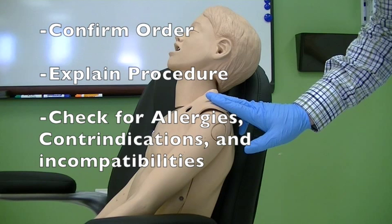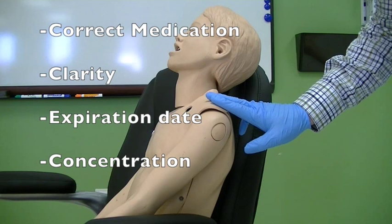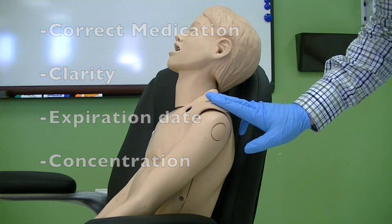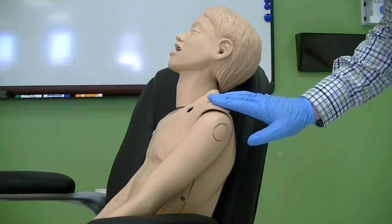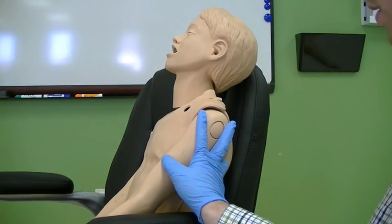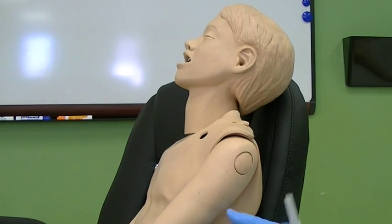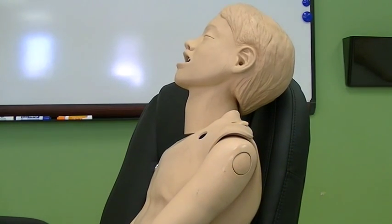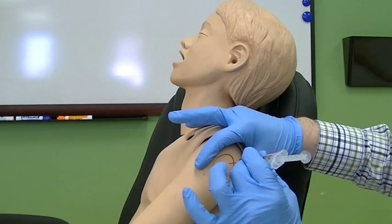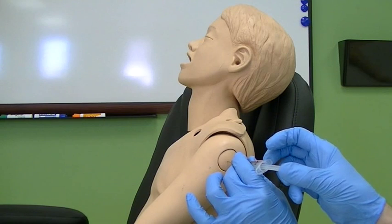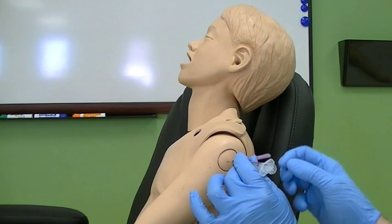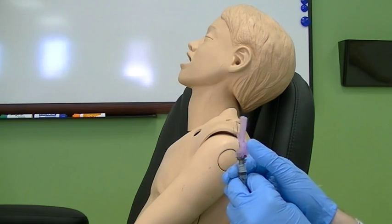Confirm the order for the medication and explain the procedure to the patient. Check for any known allergies, contraindications, and incompatibilities. Check the medication for correct medication, clarity, expiration date, and concentration. Calculate the correct medication dose and measure the correct volume of medication into the syringe. Appropriately position your patient and select the appropriate injection site. Cleanse the site appropriately. Hold the skin taut around the site and introduce the needle bevel up at a 90-degree angle in one quick motion. Pull back on the plunger to aspirate and verify the absence of blood. Administer the prescribed medication, withdraw the needle, and dress the injection site. Dispose of the sharp in a sharps container.